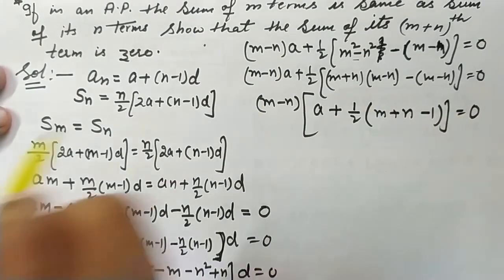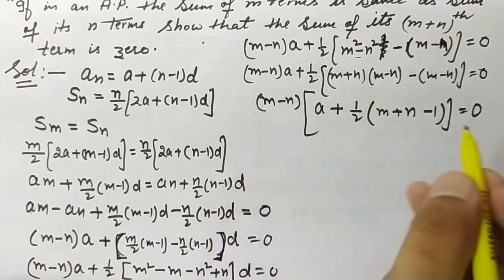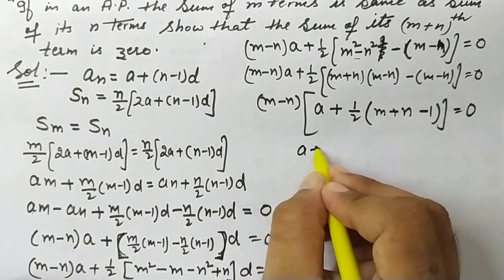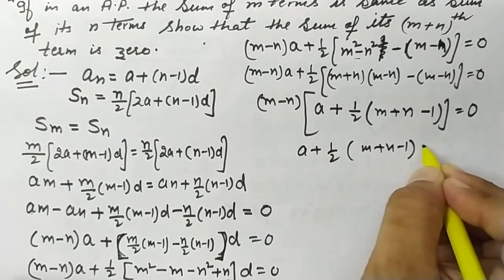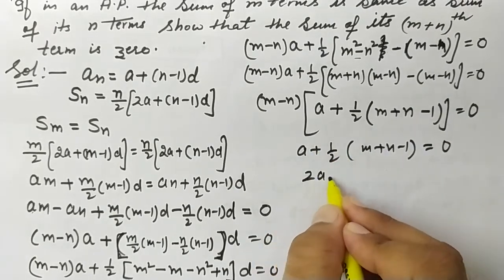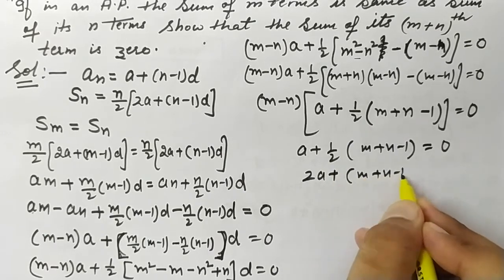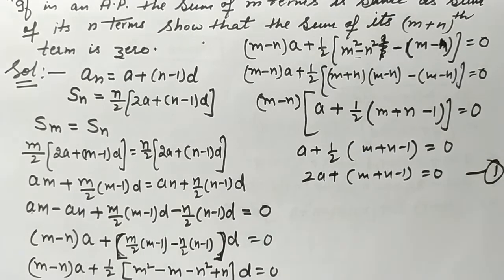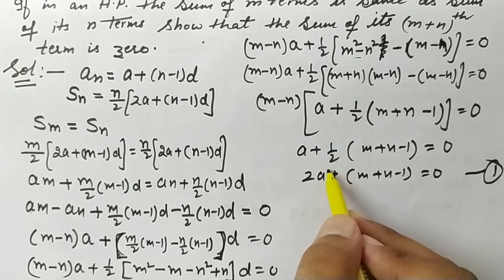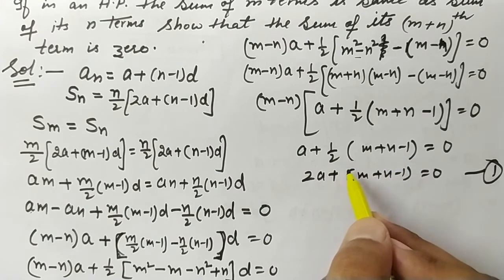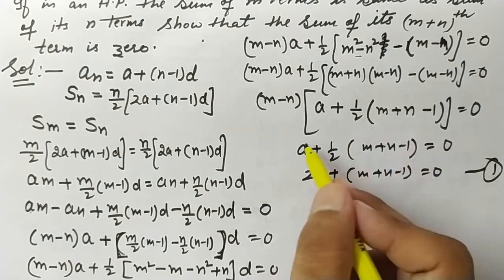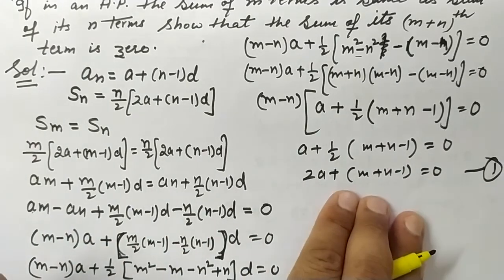Since m ≠ n, dividing both sides by (m−n) gives: a + 1/2·(m+n−1)d = 0. Multiplying through by 2, we get our key Equation 1: 2a + (m+n−1)d = 0.